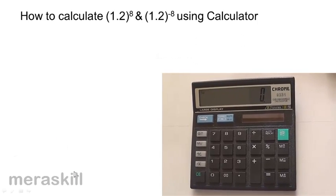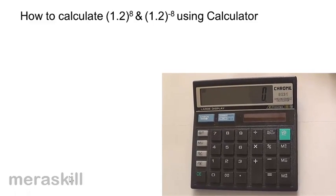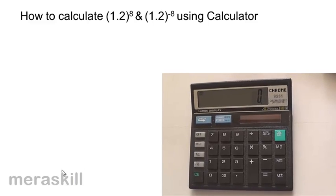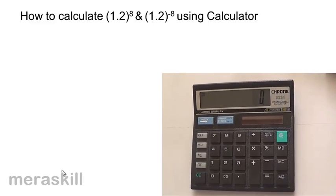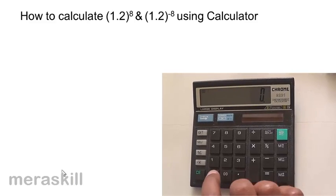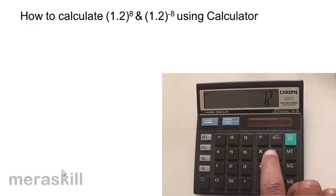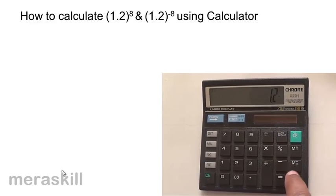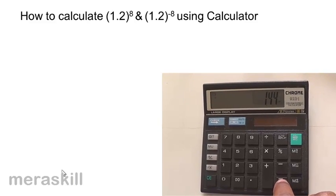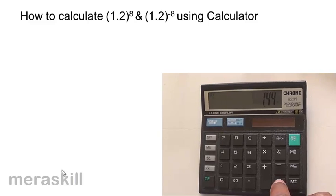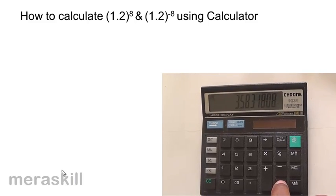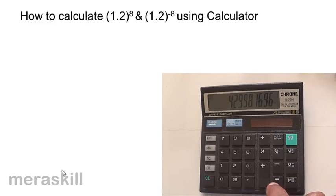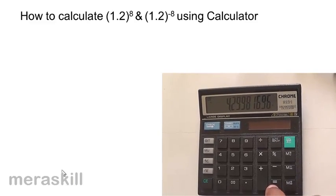Let's take a couple of examples. Say you need to calculate 1.2 raised to 8. Now, 1.2 raised to 8 means 1.2 multiplied by itself 8 times. So we enter 1.2, press multiply, then press equals repeatedly — counting: 2, 3, 4, 5, 6, 7, and 8. So you have done 1.2 multiplied by itself 8 times, which is the same as 1.2 raised to 8.